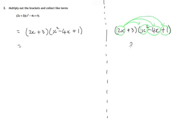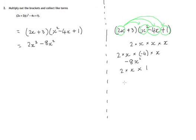2x times x squared, let's just write that out. There's 2 times x times x squared. That's x squared. So there's 2 and x cubed, 2x cubed. That's 2x times x squared. Let's now do 2x times negative 4x, 2 times x times negative 4 times x. So 2 times negative 4 is negative 8, x times x is x squared, so it's negative 8x squared. And let's do 2x times positive 1, 2x times 1, that's just 2x.